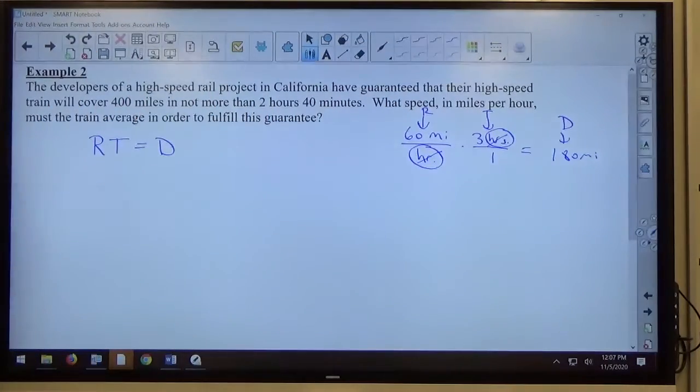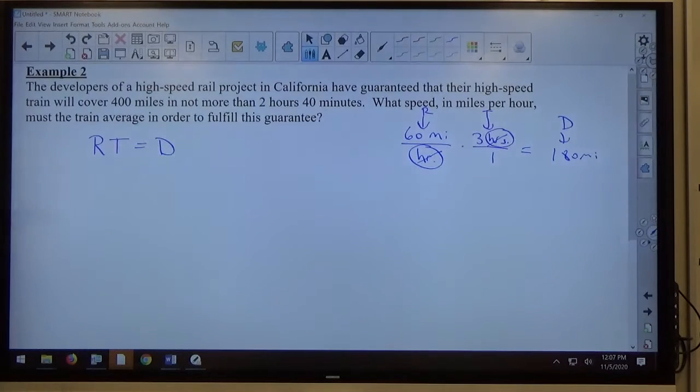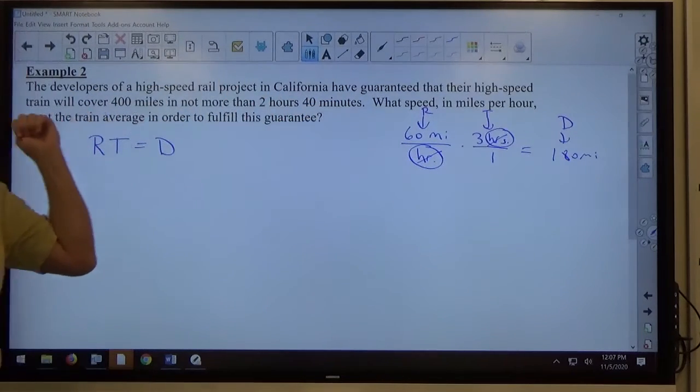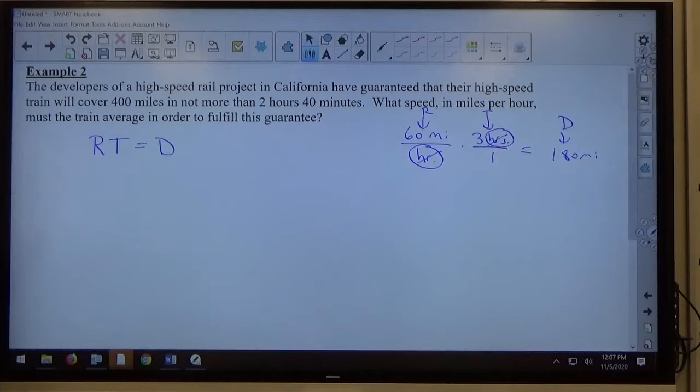So when you're dealing with rates, times, and distances, that's the relationship between those 3 things. So once I start seeing speeds and distances and things like that, 400 miles is a distance, 2 hours and 40 minutes is a time, all right? That alerts me to the fact that I'm dealing with a rate, time, distance problem, so this is my relationship.